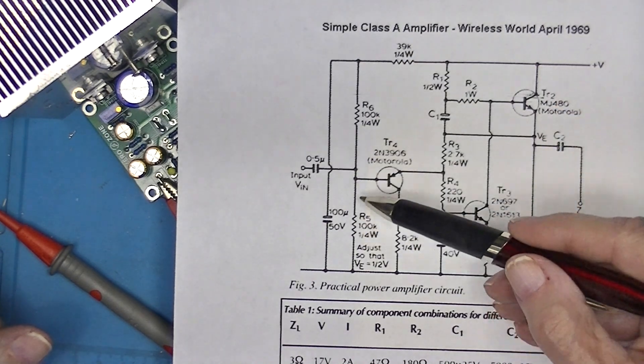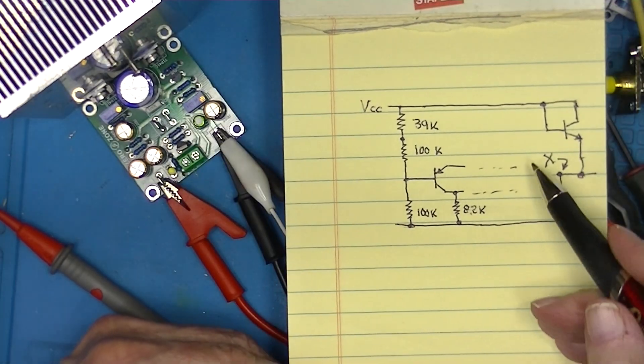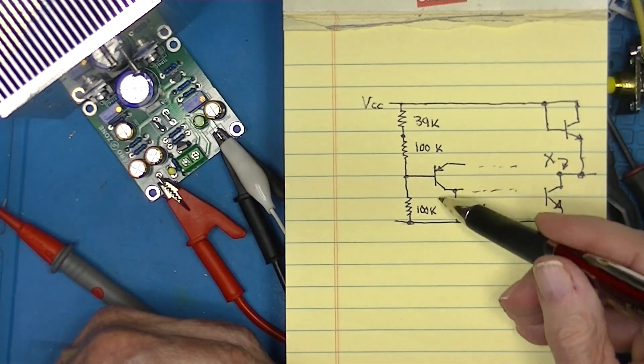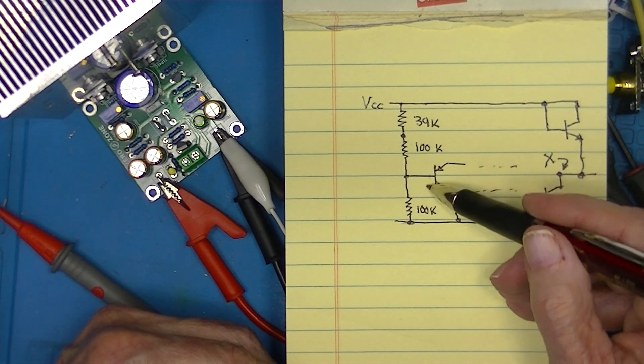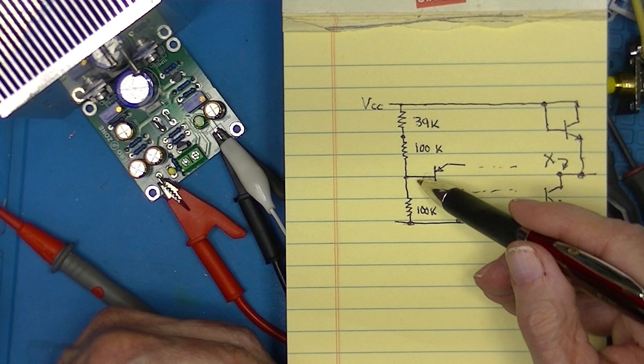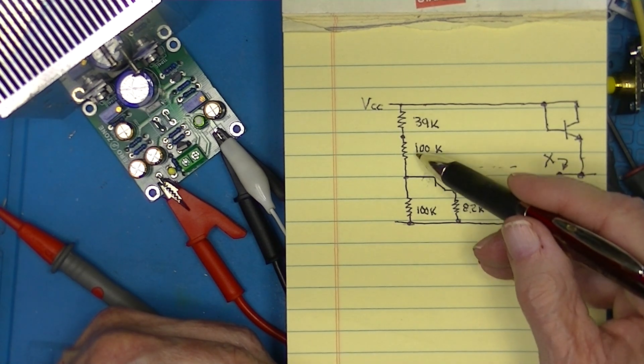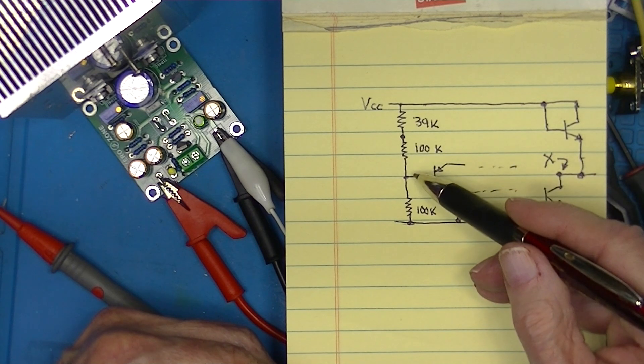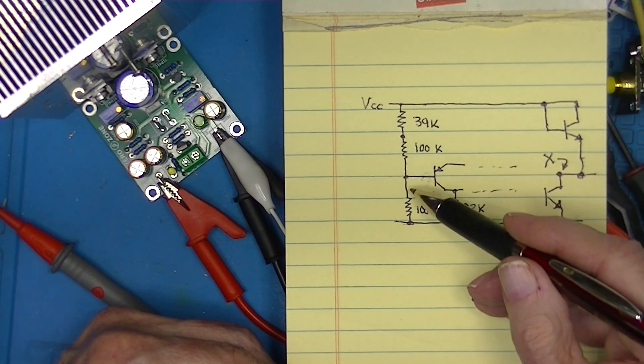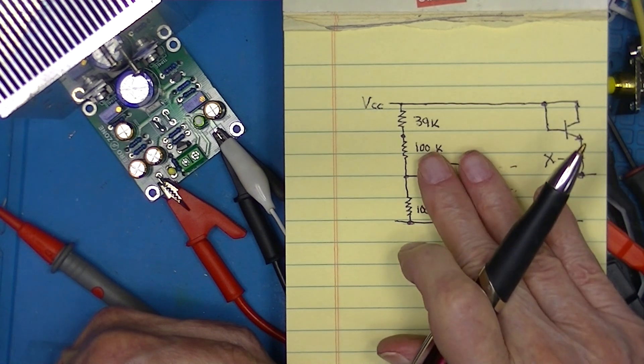The voltage divider is composed of these three resistors. I'm going to simplify the drawing a little bit. You can see that neglecting the current, the voltage here will be less than one half of this because this total resistance up here is 139K and this is 100K.